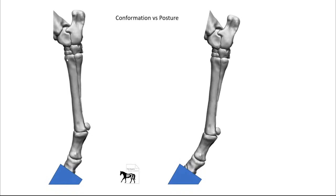Taking this hind leg as an example — the shape and sizes of the bones are what they are. Wolf's Law tells us bones can change according to stresses placed upon them, but this happens slowly over time. The posture of the horse is where it chooses to place those bones in space. They can change the angle of joints and orientation of bones, but conformation hasn't changed — posture has. Posture is something farriery can directly affect, so knowing the difference becomes important in making farriery decisions.